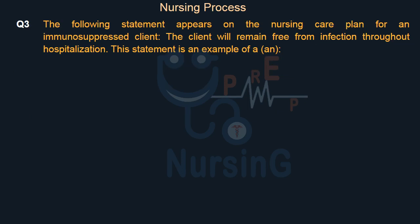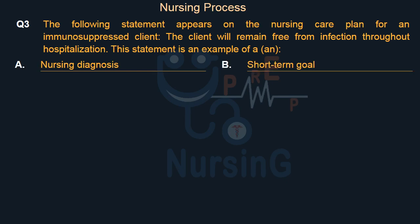The following statement appears on the nursing care plan for an immunosuppressed client: 'The client will remain free from infection throughout hospitalization.' This statement is an example of — Option A: Nursing diagnosis. Option B: Short-term goal.